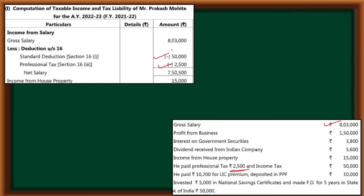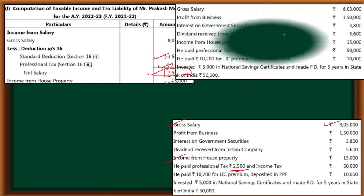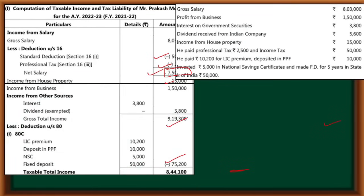This year we have income from the financial year. The gross salary is 7,50,000. We have income from salary and income from house property directly. There is no other information given — no municipal tax, interest on loan, or anything. So the income from house property is 15,000. Next, income from business: we got directly 1,50,000 — no expenses allowable or disallowable, no information. So directly we get the income from salary, income from house property, income from business.